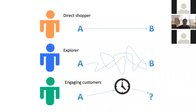The third type is engaging customers — they've already been converted into loyal users. They expect to see different things each visit, since they may come every day to check on new things. The information we provide should be sufficient for them to make decisions quickly without feeling lost. For this type of user, we provide more assortments, more choices, and more surprise products so they feel more engaged.